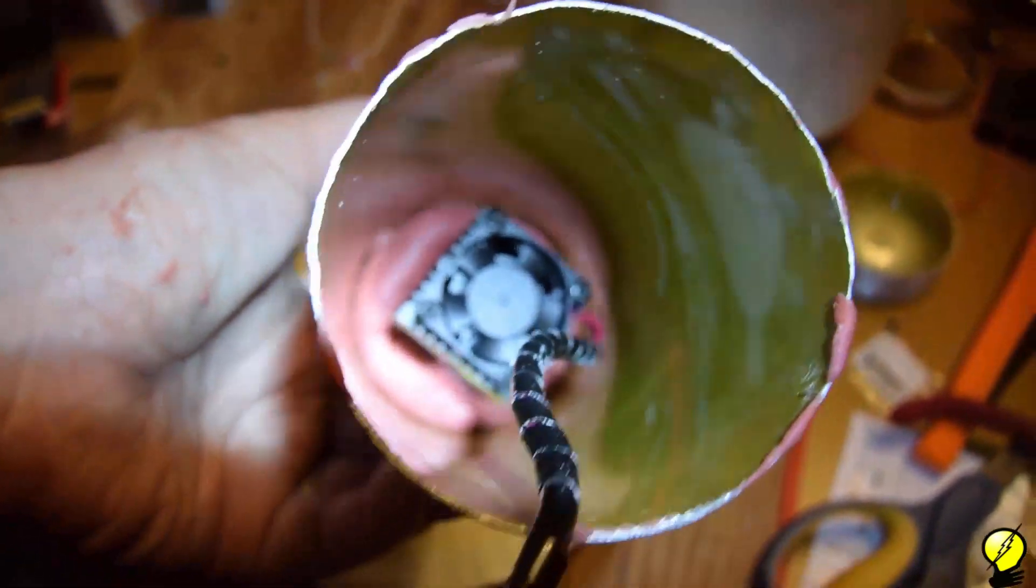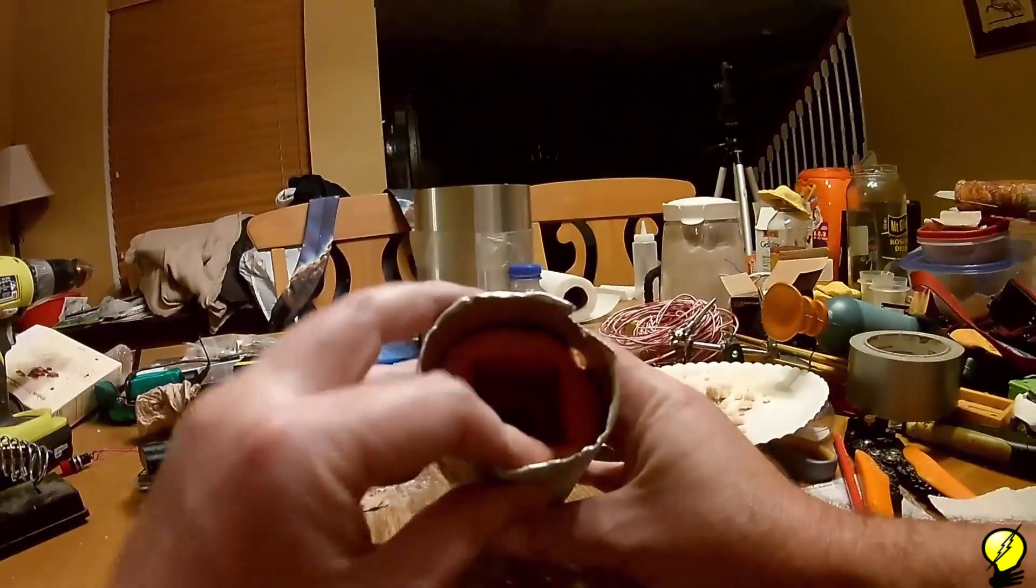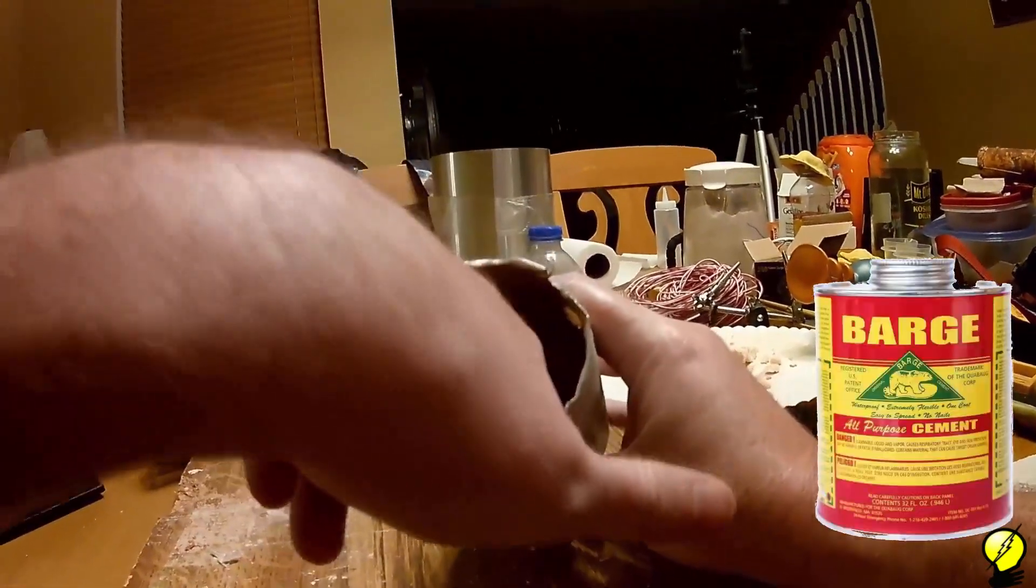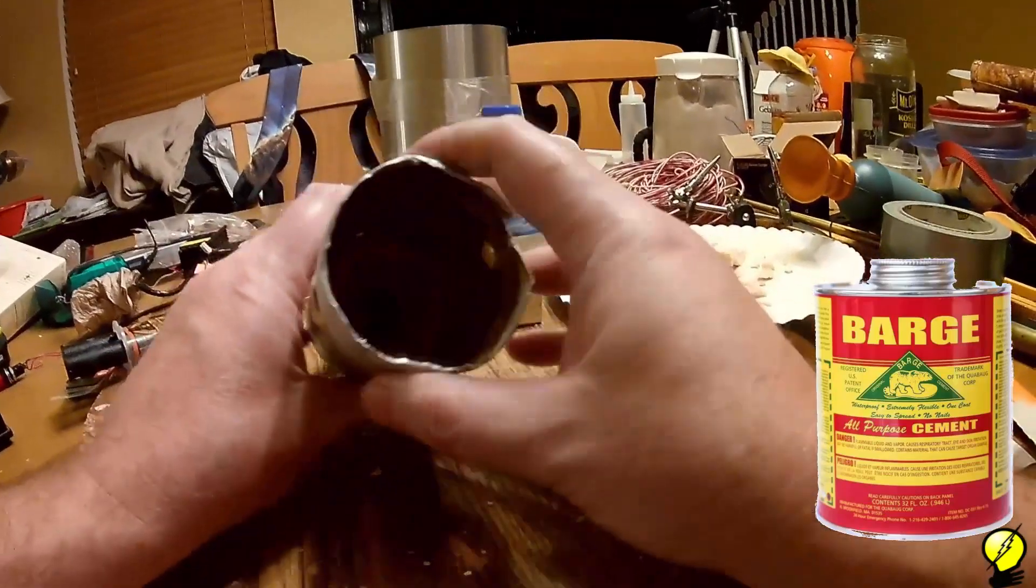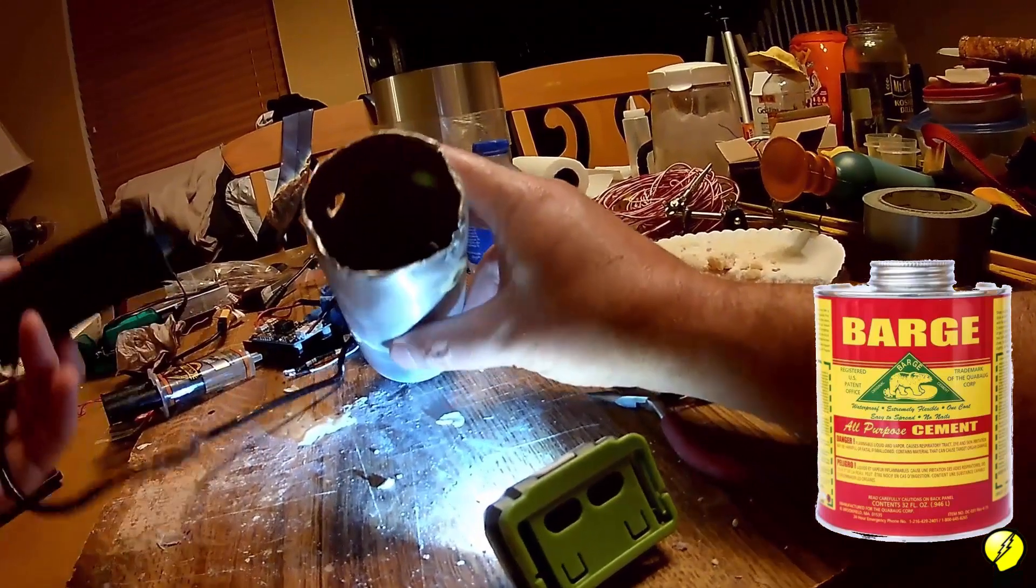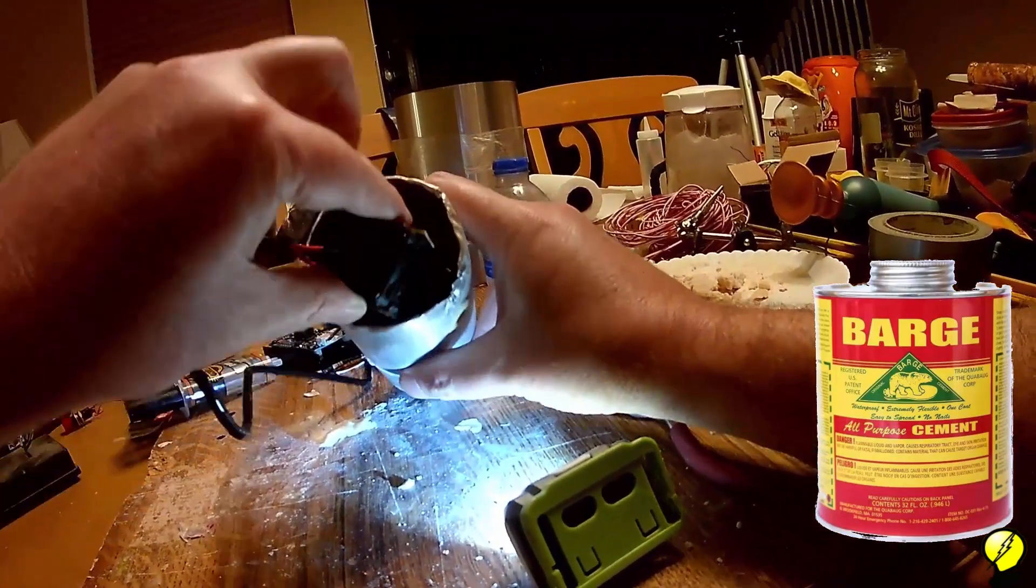After it's cured, remove the rubber and the laser from the canister. Then coat the outside of the rubber with this glue. Use a heat gun on the glue for about 10 seconds. And then reinsert the rubber and the laser into the canister. This will hold the laser firmly in place.